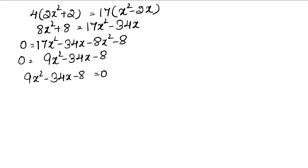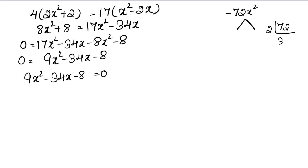For factorization, multiply the constant value (−8) with the x² coefficient (9), giving −72x². We need two factors of 72 whose difference gives 34. Let's find the factors of 72: 2×1=2, 2×3=6, 2×6=12, and so on.